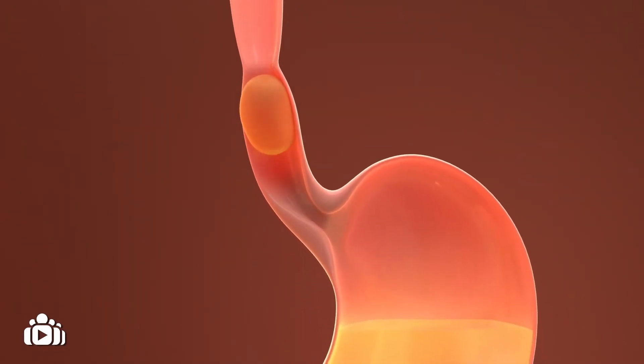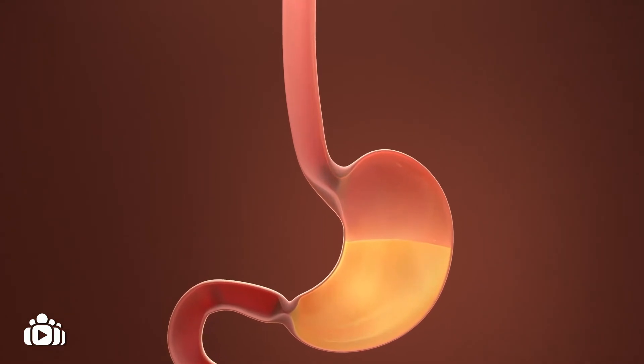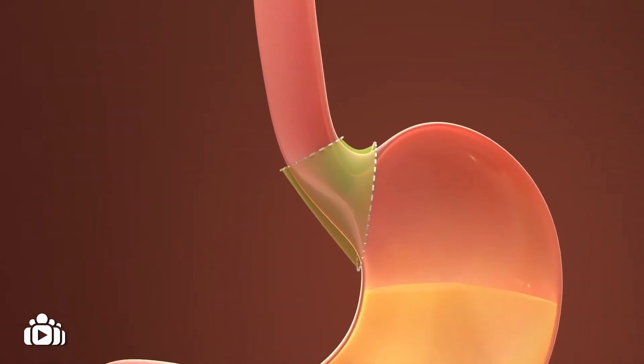This is called peristalsis. Before the food enters the stomach, it passes through a muscular valve known as the cardia.